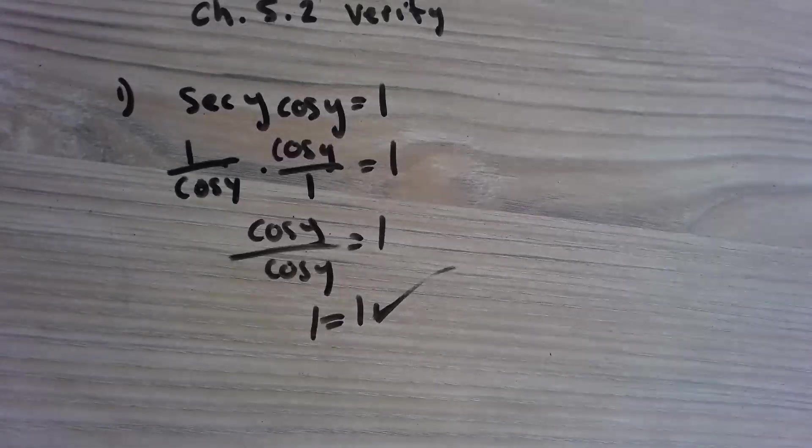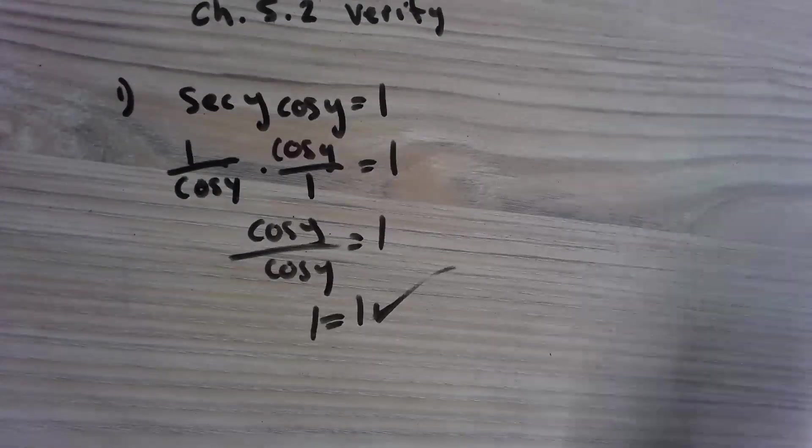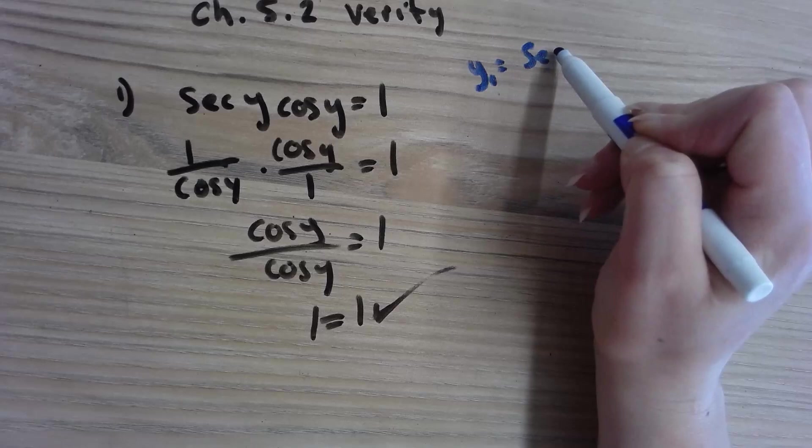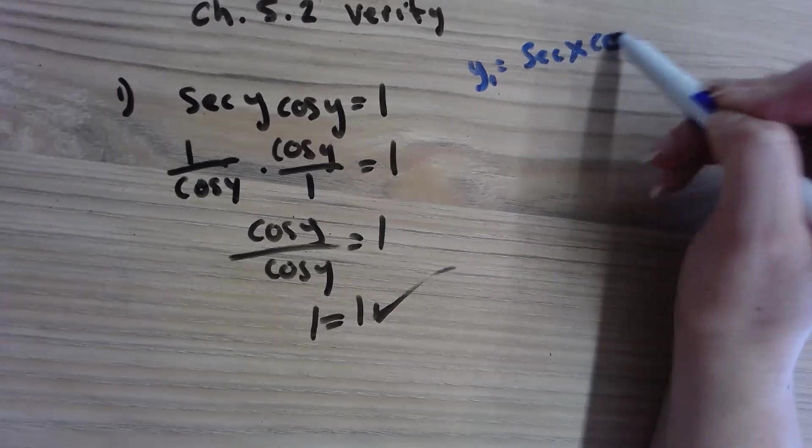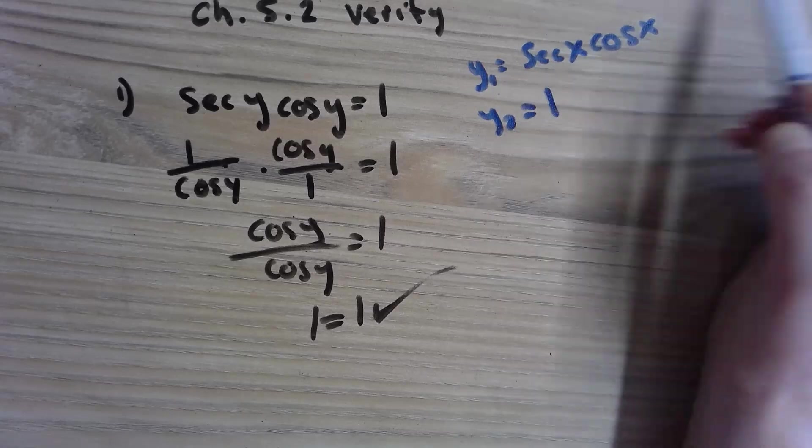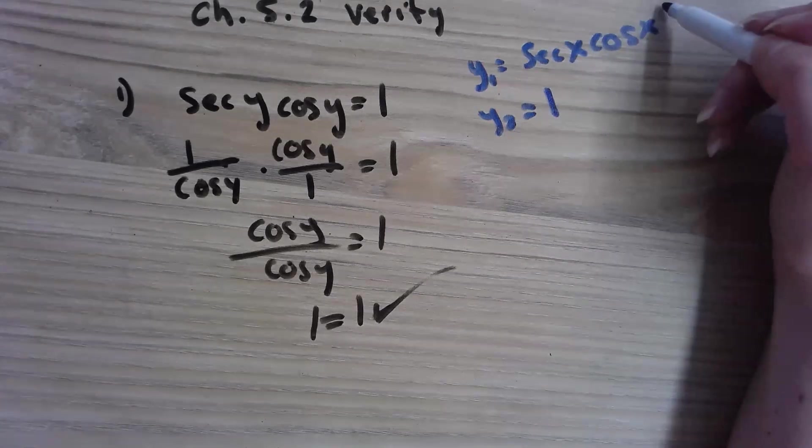If you notice on your assignment it will have things that say verify by graphing or using your calculator and your table of numbers. That just means if you put in y1 secant, let's say x cosine x, then y2 you did the equation 1, these two graphs would look the same.